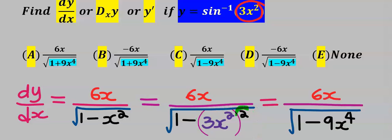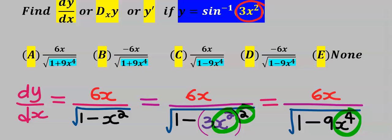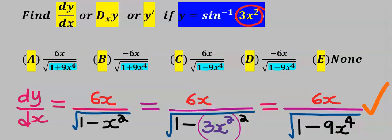Next, we apply the law of indices: we square 3 and get 9, and we square x squared to get x to the power of 4. This becomes our dy/dx. From the options, our answer is C.